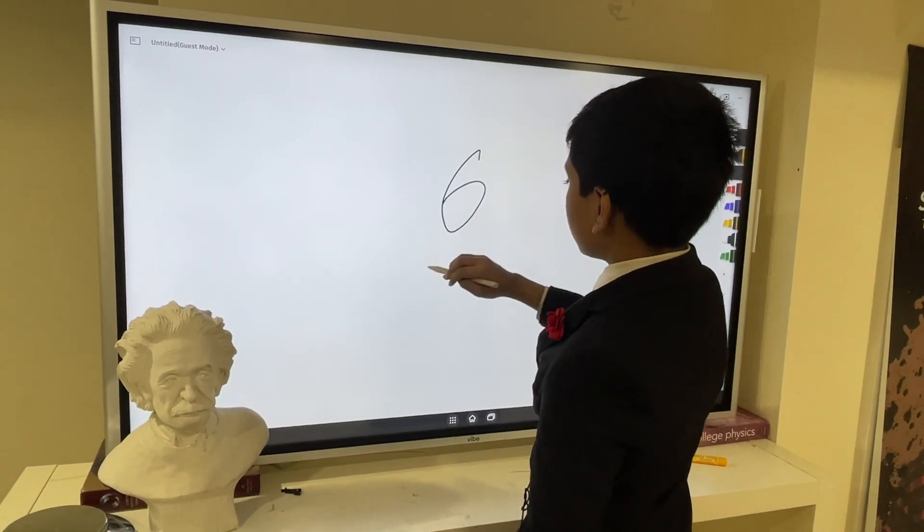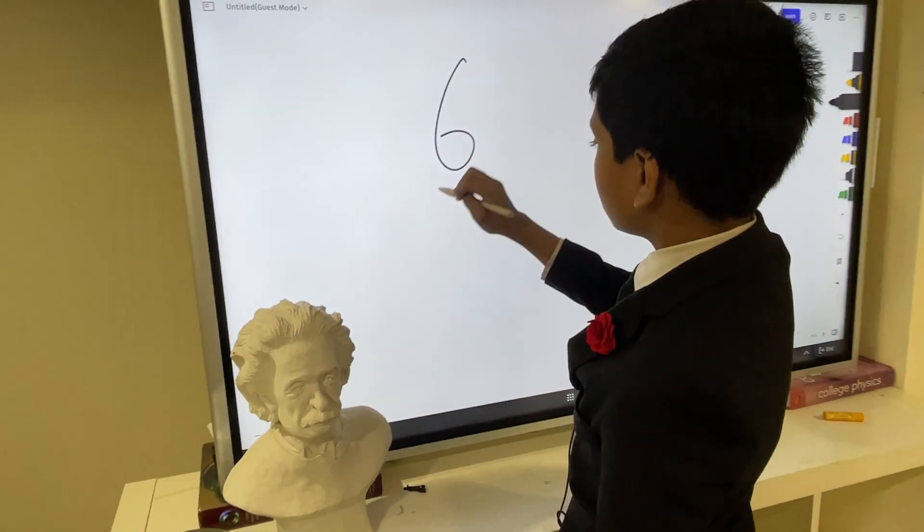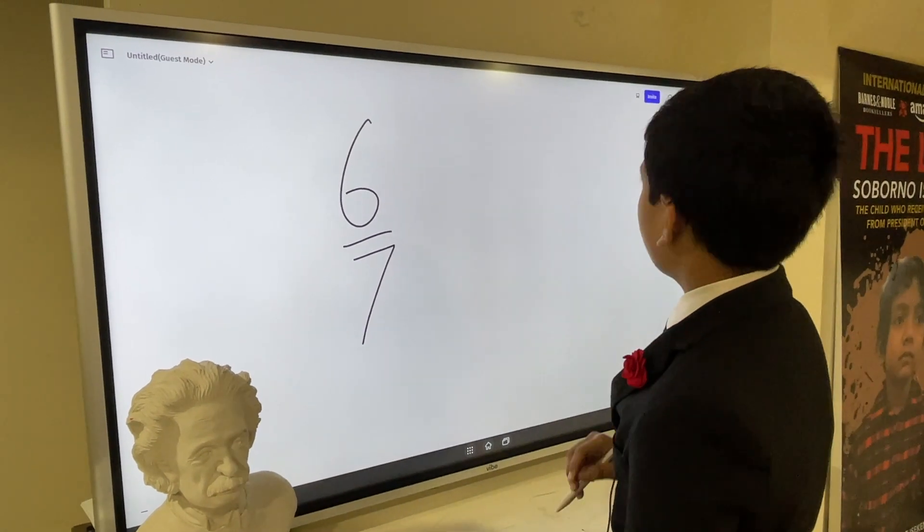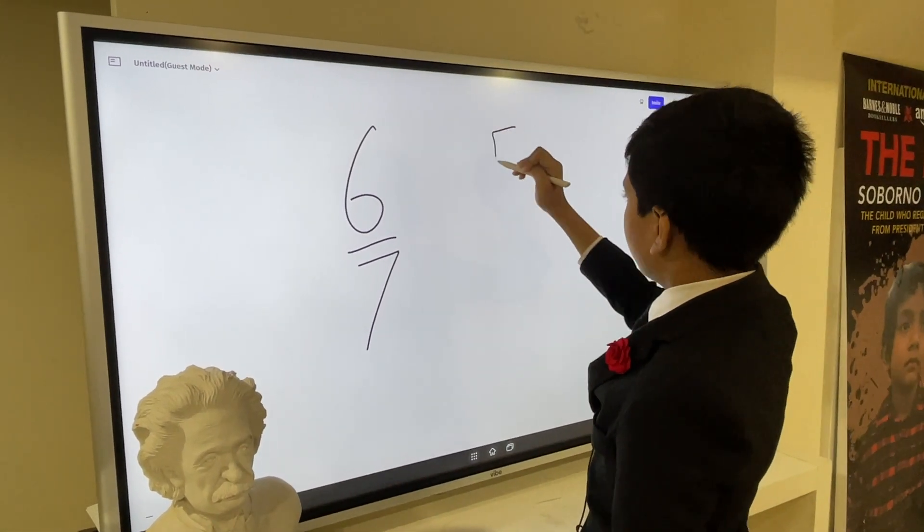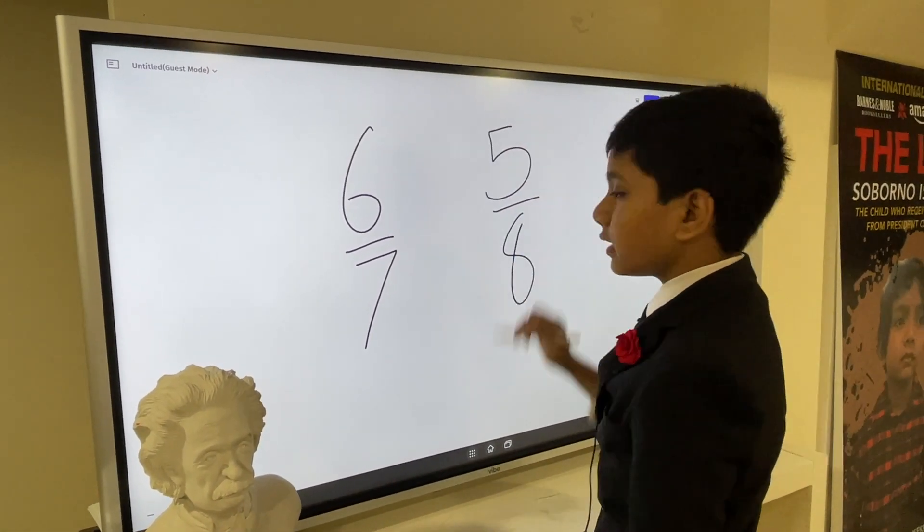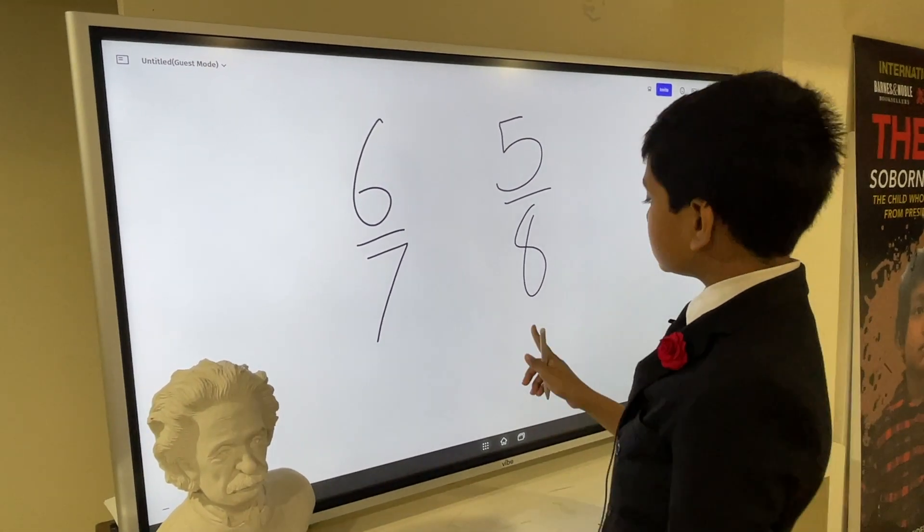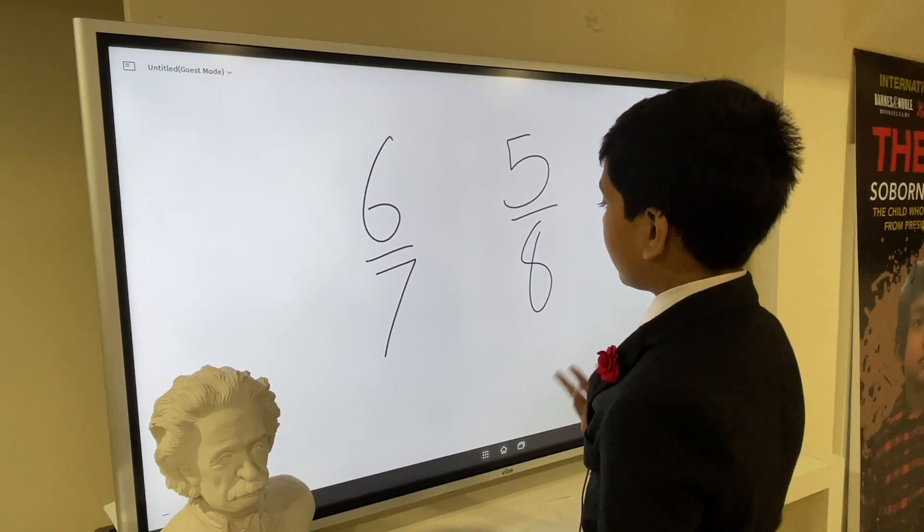Between six over seven and let's say five over eight. Let's try comparing these two numbers. First, we're going to have to find their least common denominator.